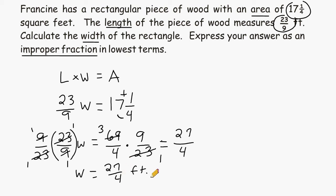Now this problem wanted us to express our answer as an improper fraction. If we did want to write it as a mixed number, we would take 27 and divide it by 4. And 4 can be divided into 27 a total of 6 times, which is 24. And that leaves us with 3 left over. So we would take that 3, write it as our numerator, and our divisor over here becomes our denominator. So the width of this rectangle is 6 and 3 quarters feet, and as an improper fraction, it is 27 over 4.